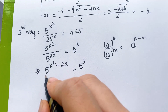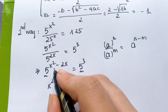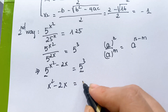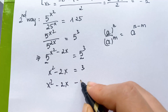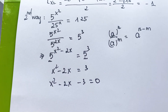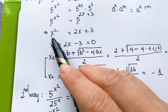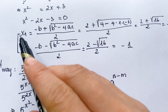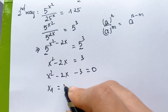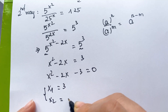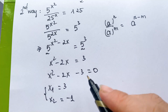We can see it's the same base. Therefore, the exponents are equal: x squared minus 2x equals 3. So x squared minus 2x minus 3 equals 0. For this step, you can look back at the first way. We have two values of x, so x1 equals 3 and x2 equals minus 1. It's the same equation.